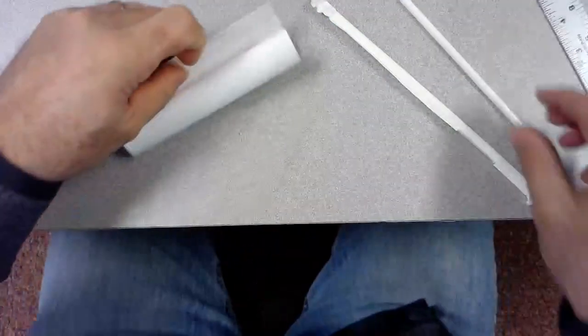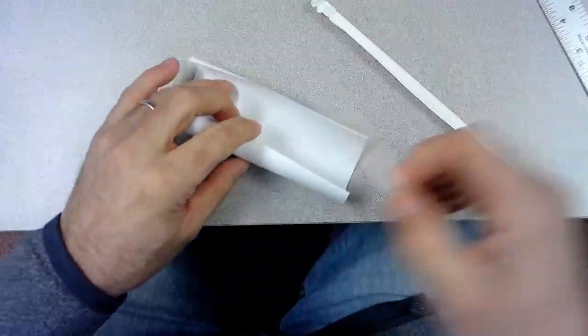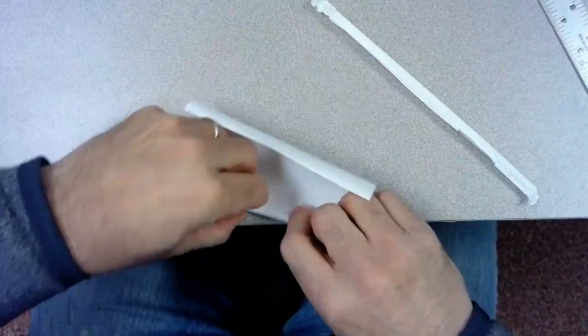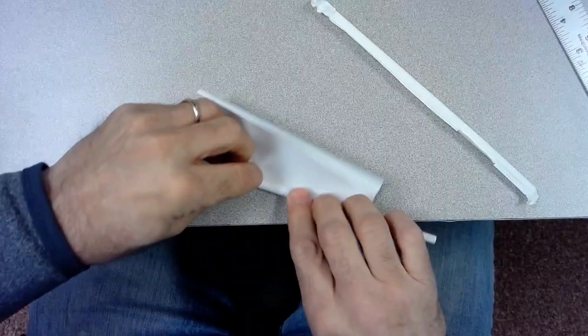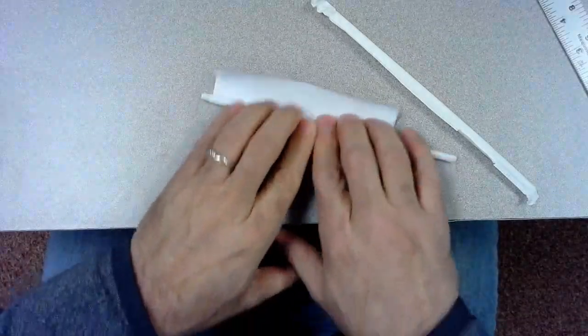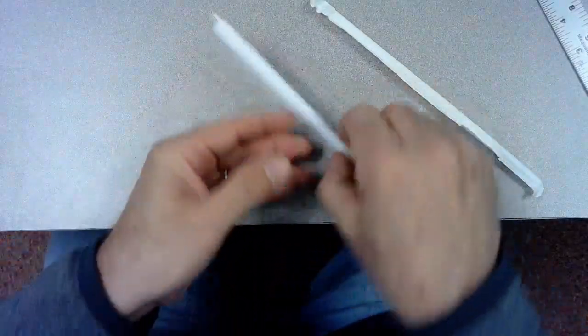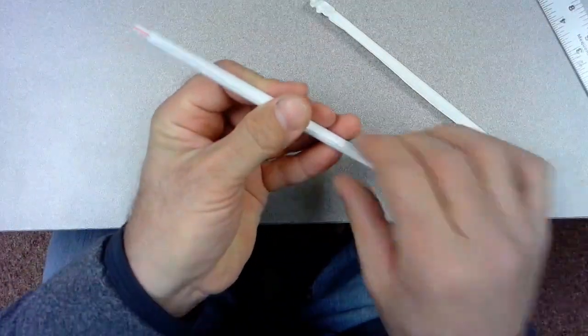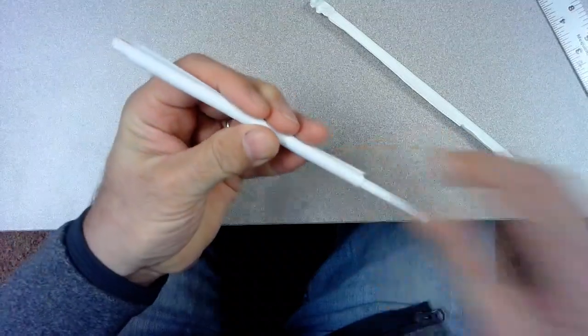Once you get it started to curl, you're going to take it and start rolling it around the straw. Now I like to practice a couple times to see if you can roll it up. And when it's rolled up, you want it so that the straw will actually move. You don't want it so tight that it pinches on the straw.